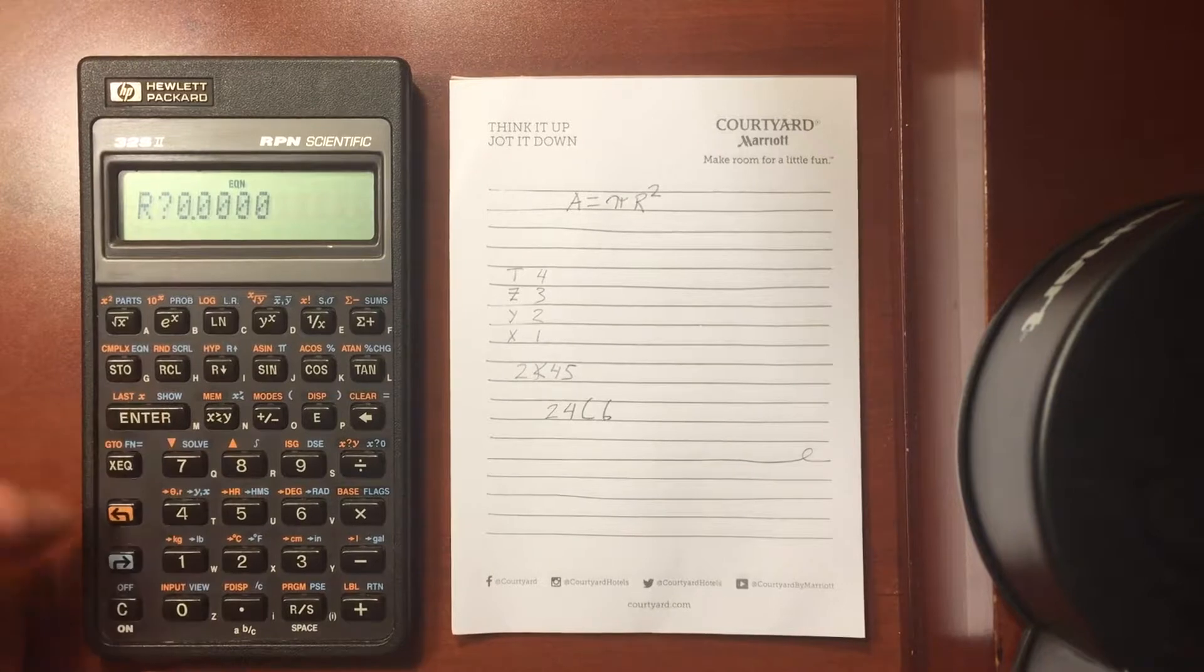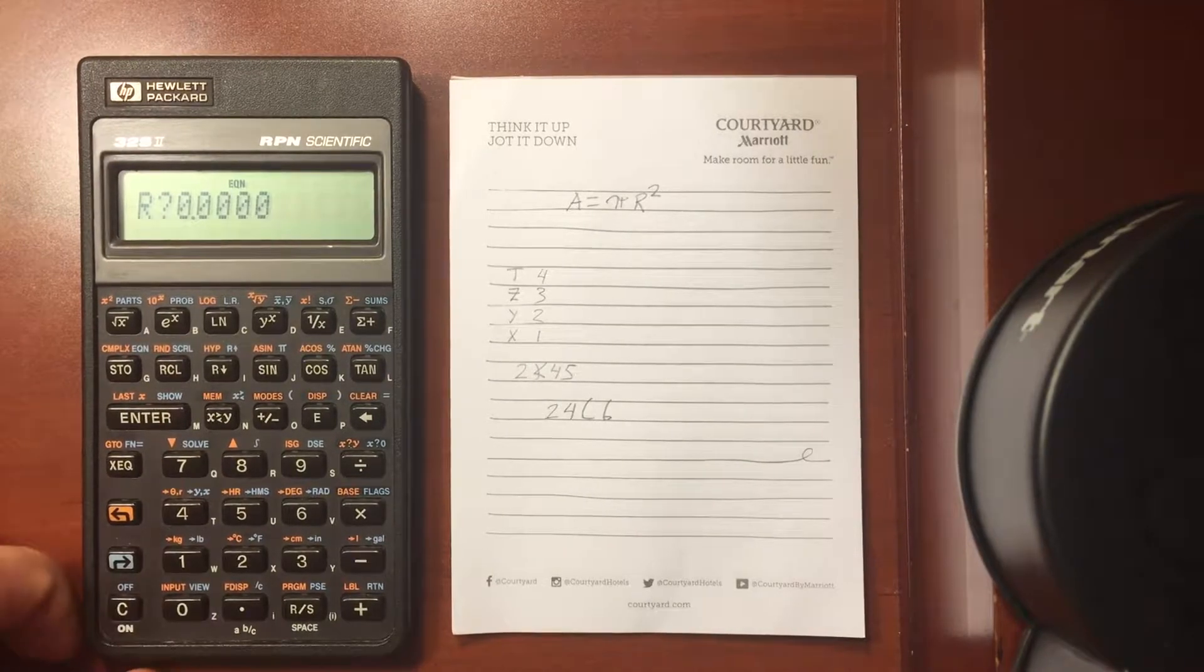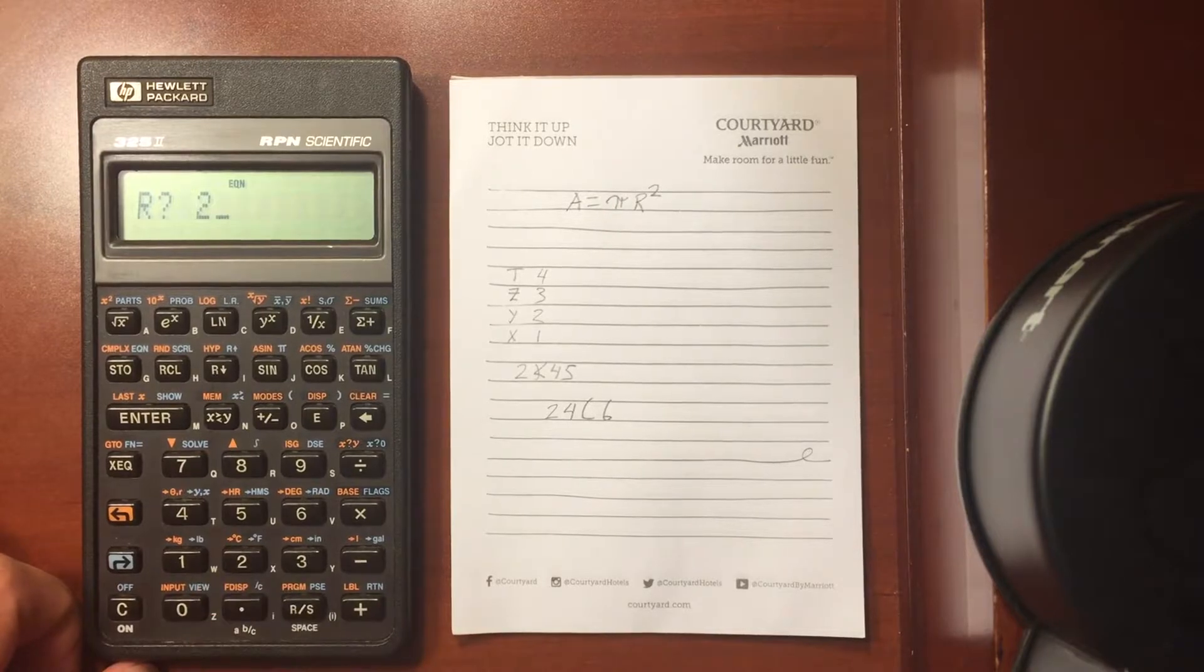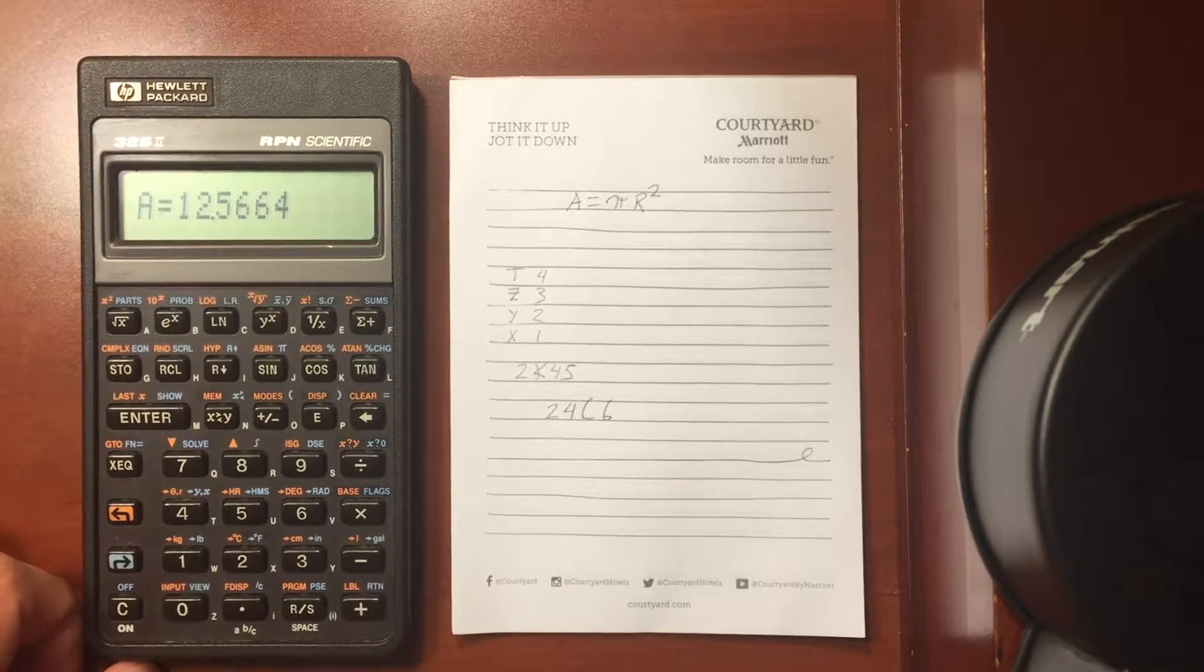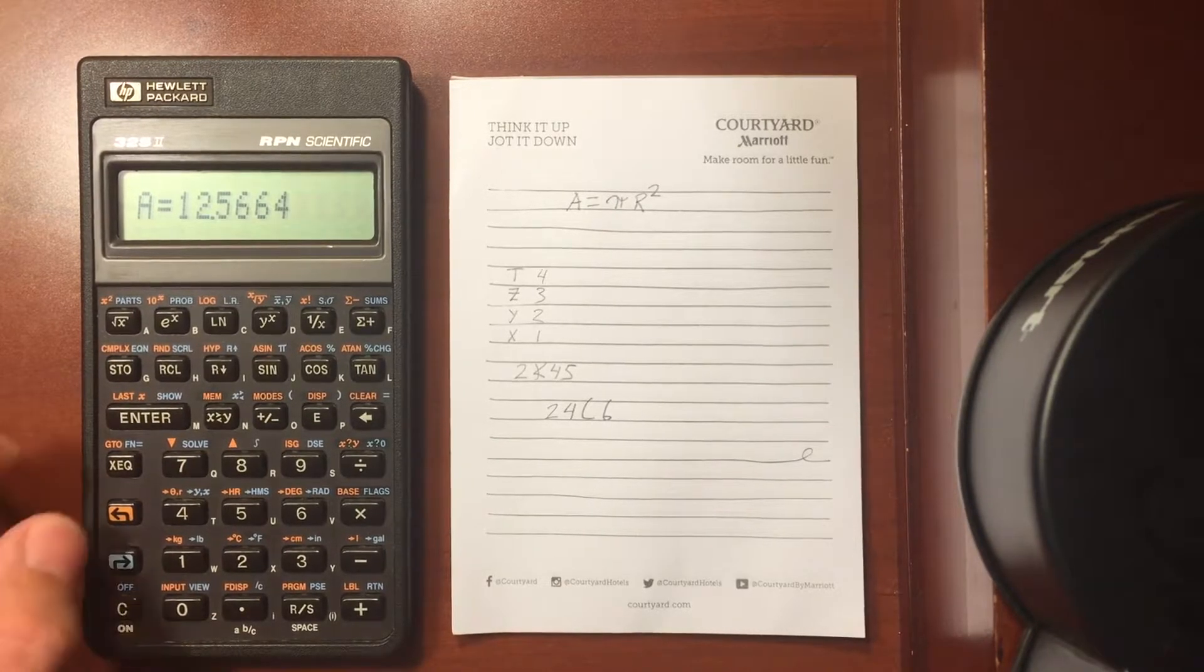So I hit enter to evaluate it, and it automatically knows we're evaluating for A, because it's on the left side of the equation. So what radius do we want? Enter 2, run stop. That gives us the area that we calculated earlier.